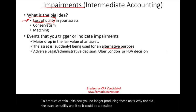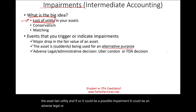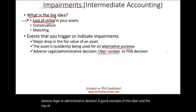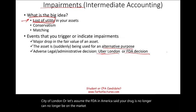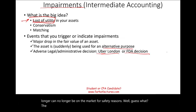It could also be an adverse legal or administrative decision. A good example is Uber and the city of London, or if the FDA said your drug can no longer be on the market for safety reasons. The assets related to that drug — or your inventory of that drug — could be impaired.